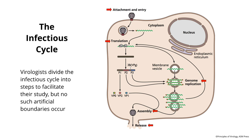Viruses have to attach to cells. They have to put their nucleic acid into the cell, either in the cytoplasm or the nucleus, depending on the virus. You may have to make mRNA that is then translated into proteins, and then the virus has to make new proteins and assemble new particles by replicating the nucleic acid. These are the steps of the infectious cycle: attachment and entry, genome replication, protein synthesis, and assembly.